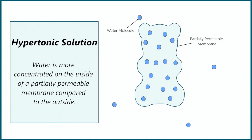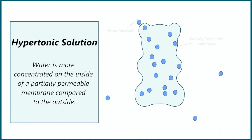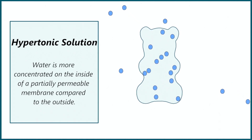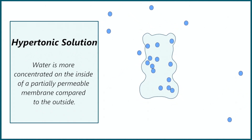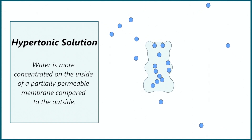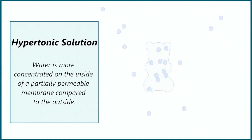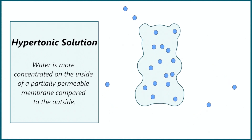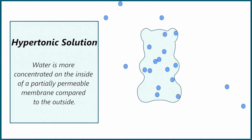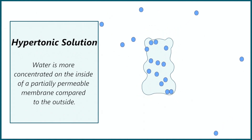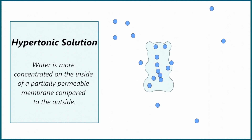The third gummy bear was filled with water and then put in a very salty solution, meaning the solution had a low concentration of water. This meant there was a higher concentration of water inside the gummy bear. Therefore it moved out of the gummy bear by osmosis across the partially permeable membrane. This made the gummy bear shrink.